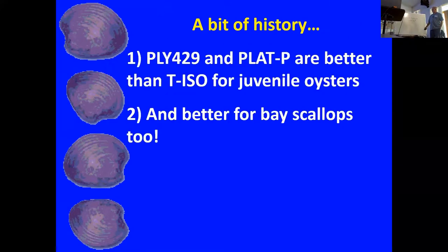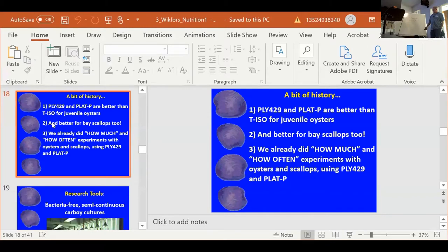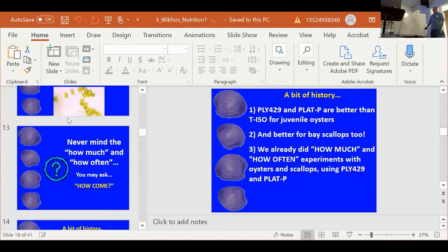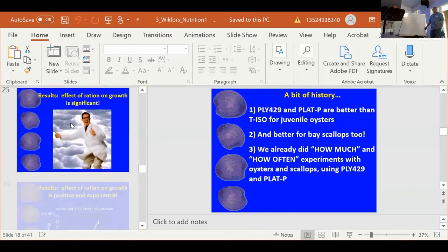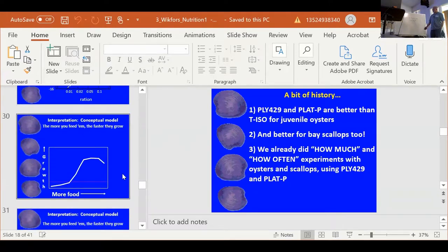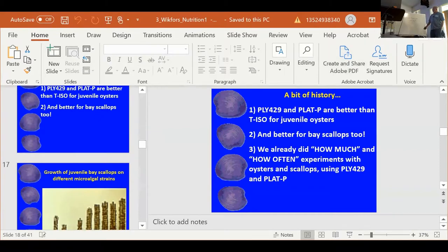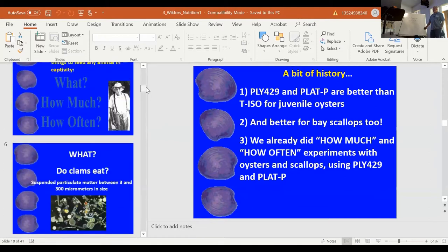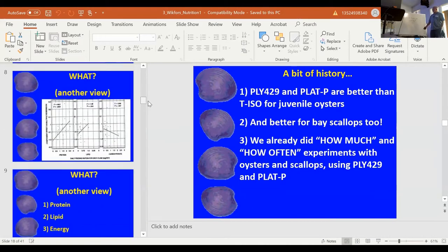For clams we did something somewhat different. We took a guess and fed a 50% POI-429 plat pea diet, which maybe was a mistake, because we already had data for oysters and bay scallops. We did the same with carboy cultured algae — pure cultures, very dependable over time — and the Mosque feeding chambers.